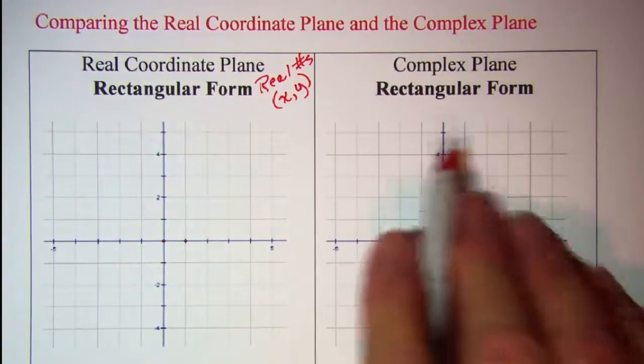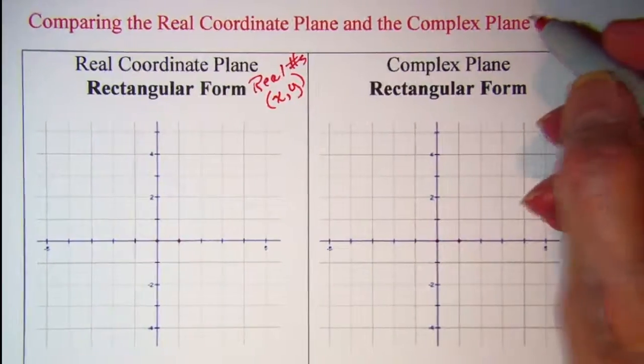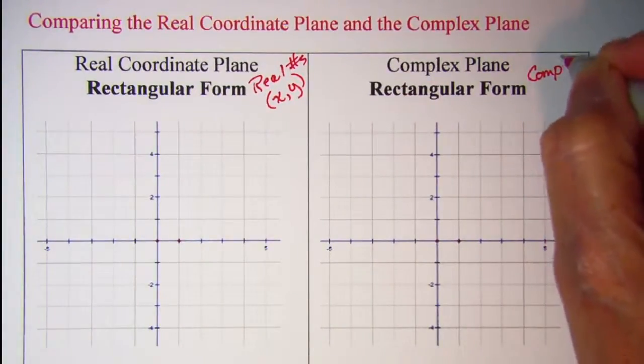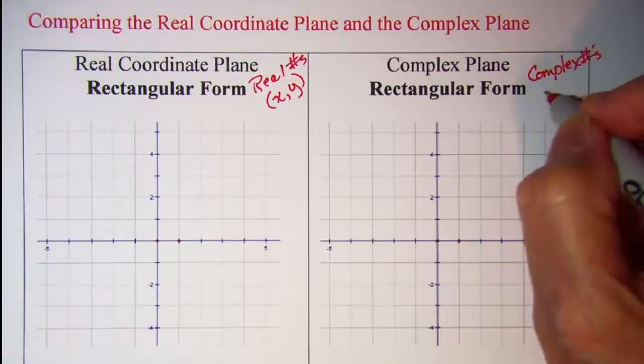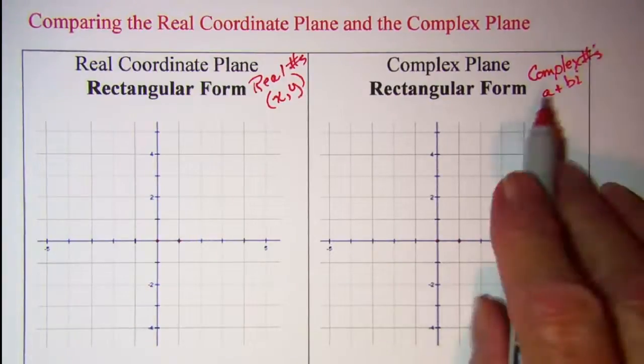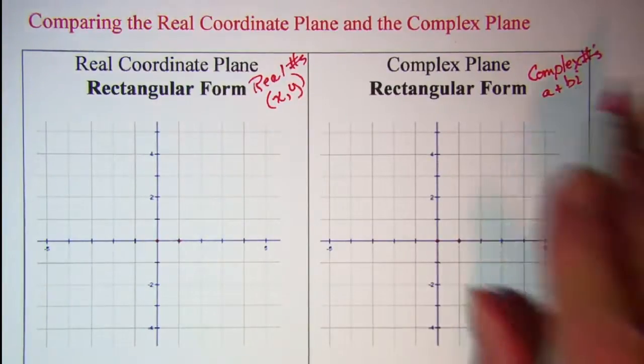On the right you'll see the complex plane, and our complex numbers will be showing as a plus bi, where a is the real part and bi is the imaginary part.